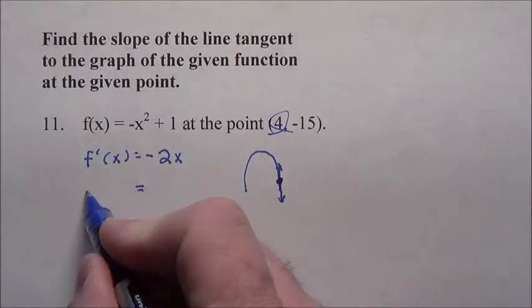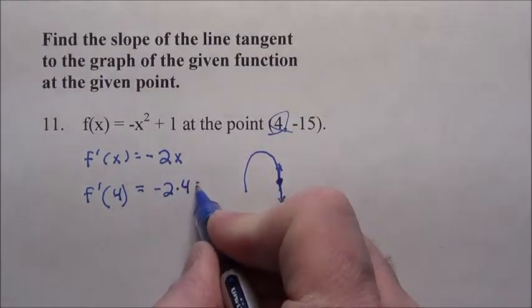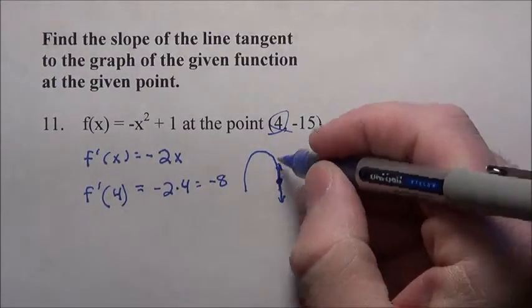So if I plug 4 into this equation, so if I do the derivative when x is 4, that's -2 times 4, -8, that would be the slope right here.